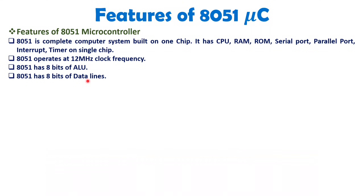The 8051 has on-chip memory, but if a programmer has more complex applications, we can interface external RAM and external ROM as well. For that you need address lines and data lines. The data lines are 8 bits wide, so in a single machine cycle we can exchange 8 bits of data with memory in the 8051.